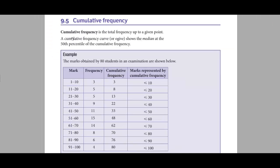A cumulative frequency is the total frequency up to a certain point. A cumulative frequency curve — also called an ogive — shows the median at the 50th percentile of the cumulative frequency.